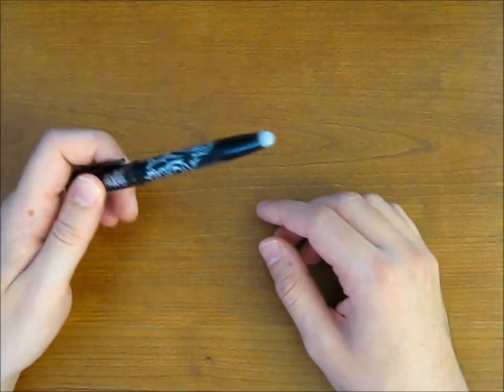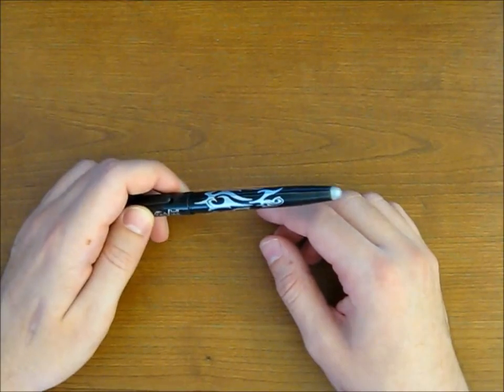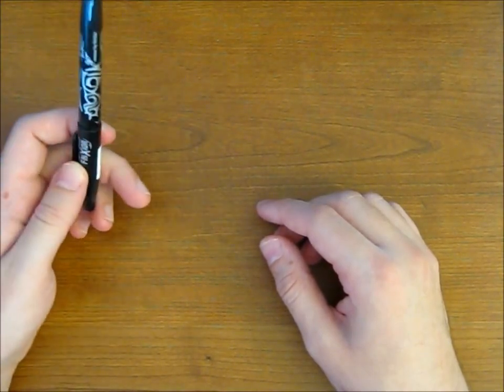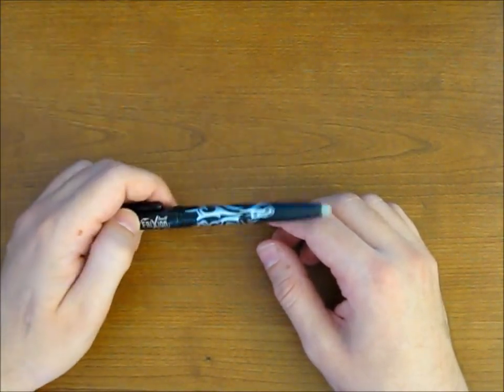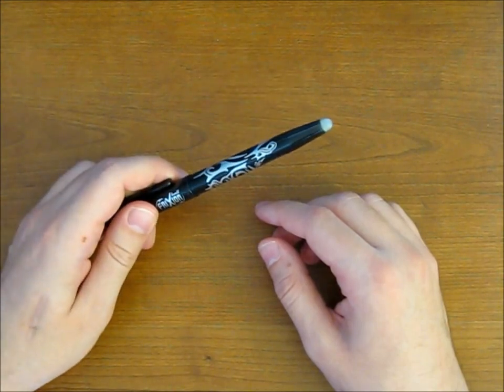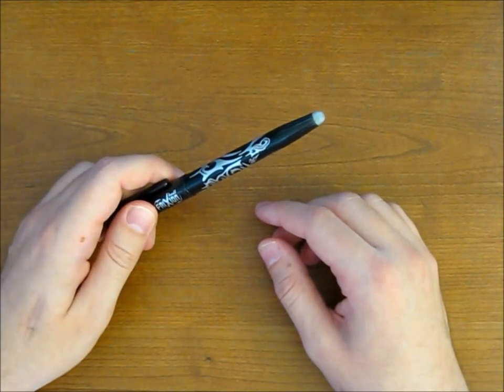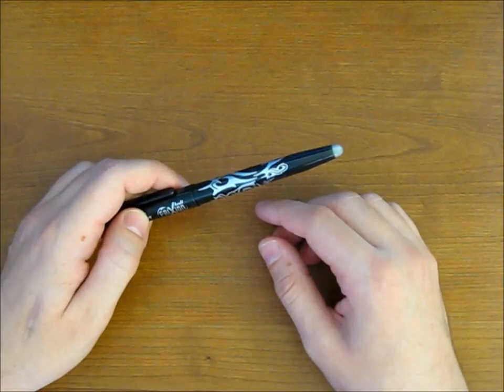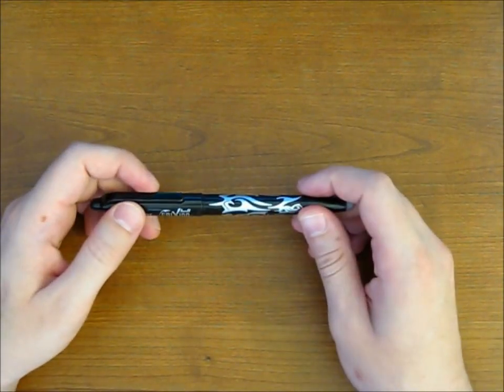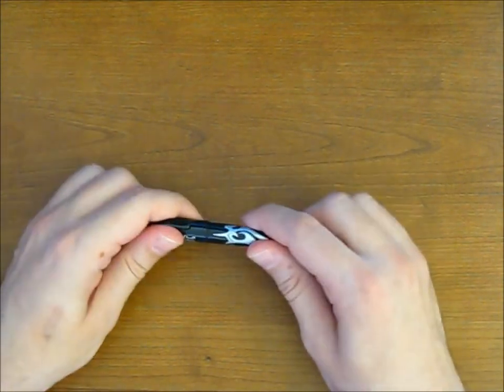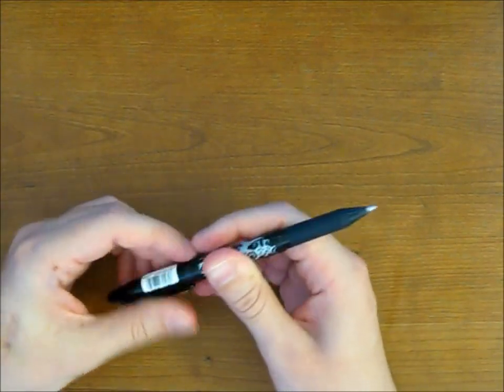They advertise that you can erase and rewrite repeatedly without damaging documents with no wear or tear. And this is accomplished by their thermosensitive gel ink formula that disappears by erasing with friction. Obviously. It is a gel ink ballpoint pen. So, we can get started on the review.